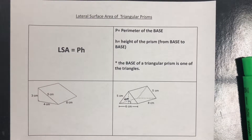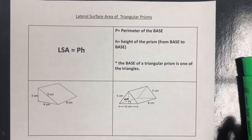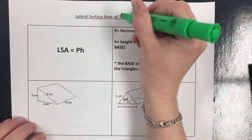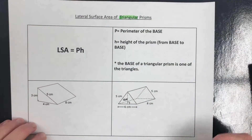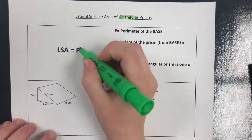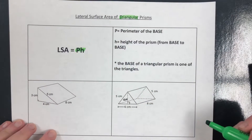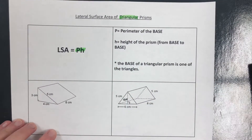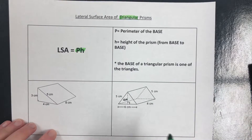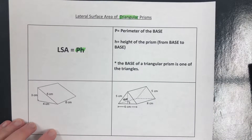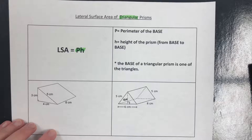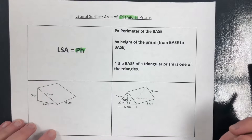Now moving on to lateral surface area of triangular prisms. For lateral surface area of prisms, we have the same formula — it is just P times H. We're going to follow a lot of the same steps, except this time we don't need the area of the base of the figure. The lateral surface area does not include the bases of the figure.